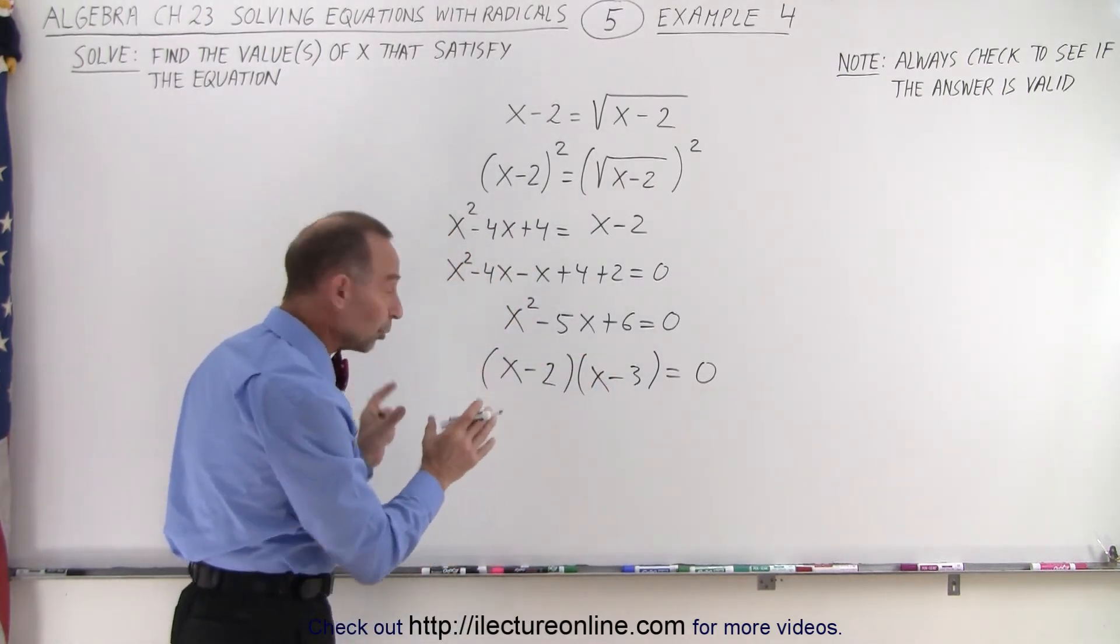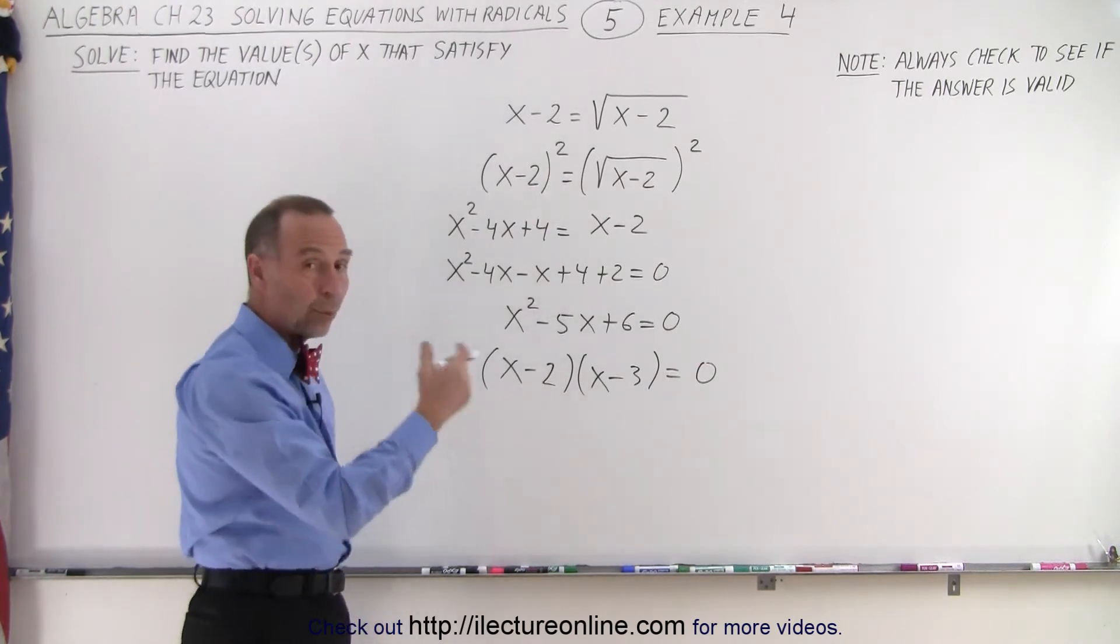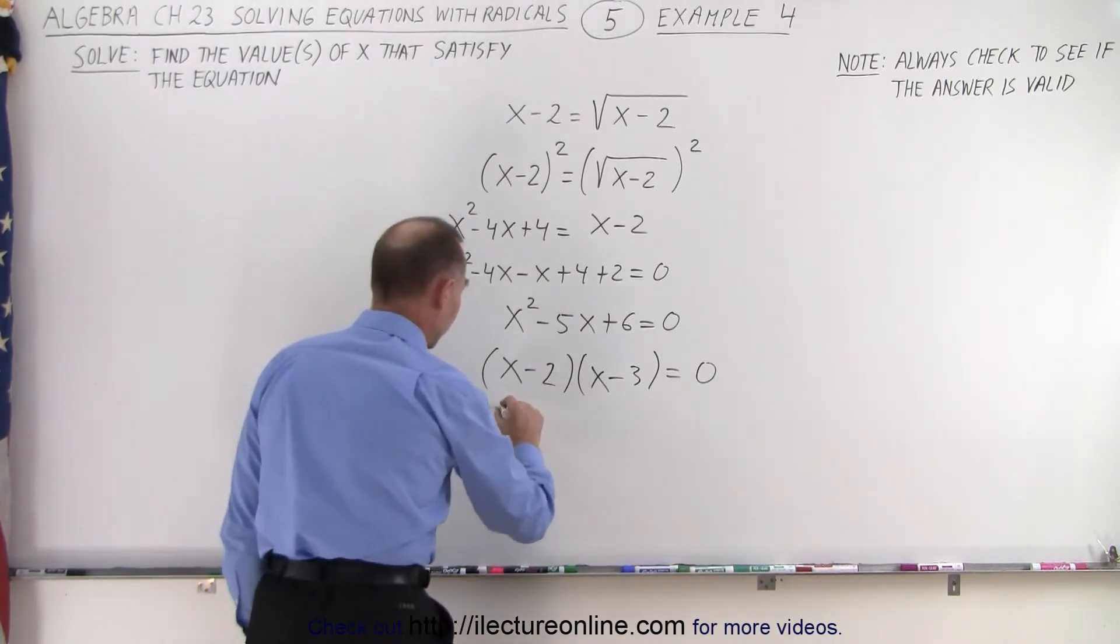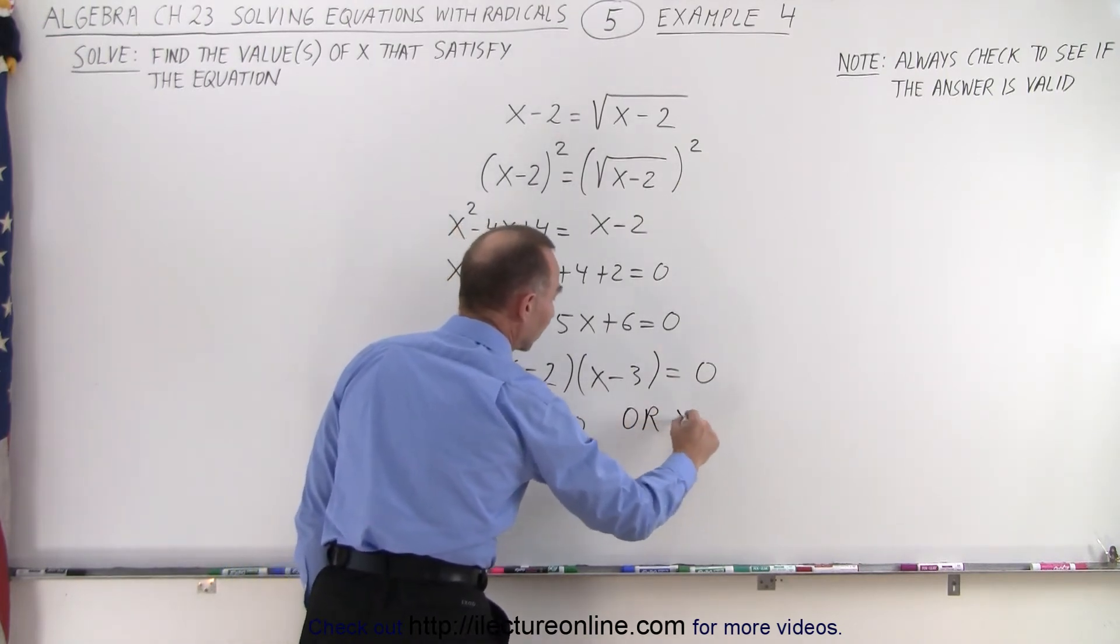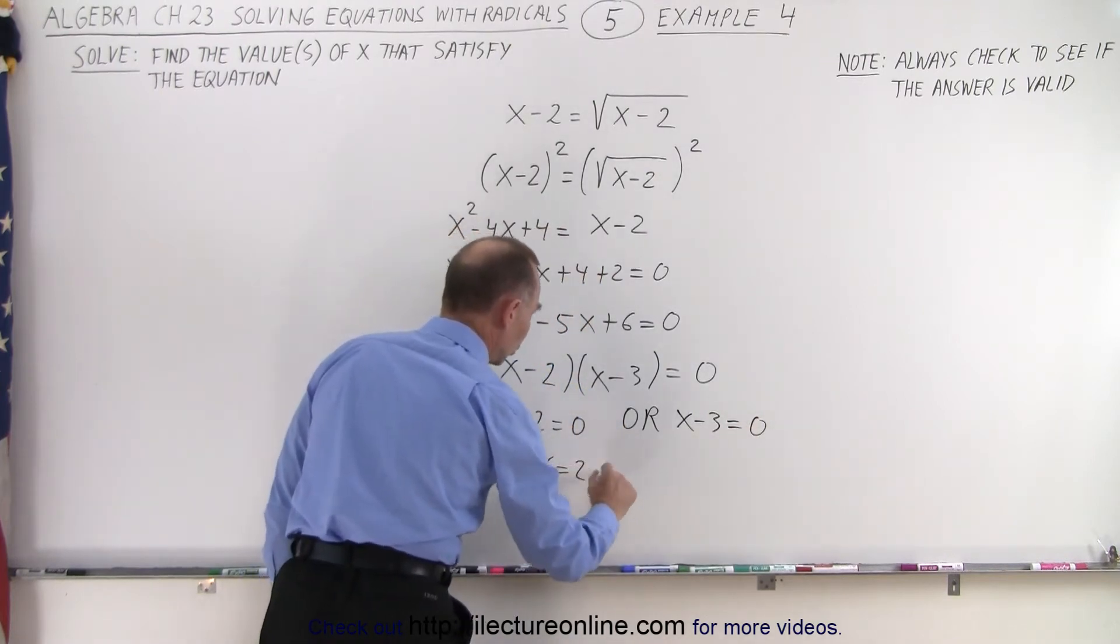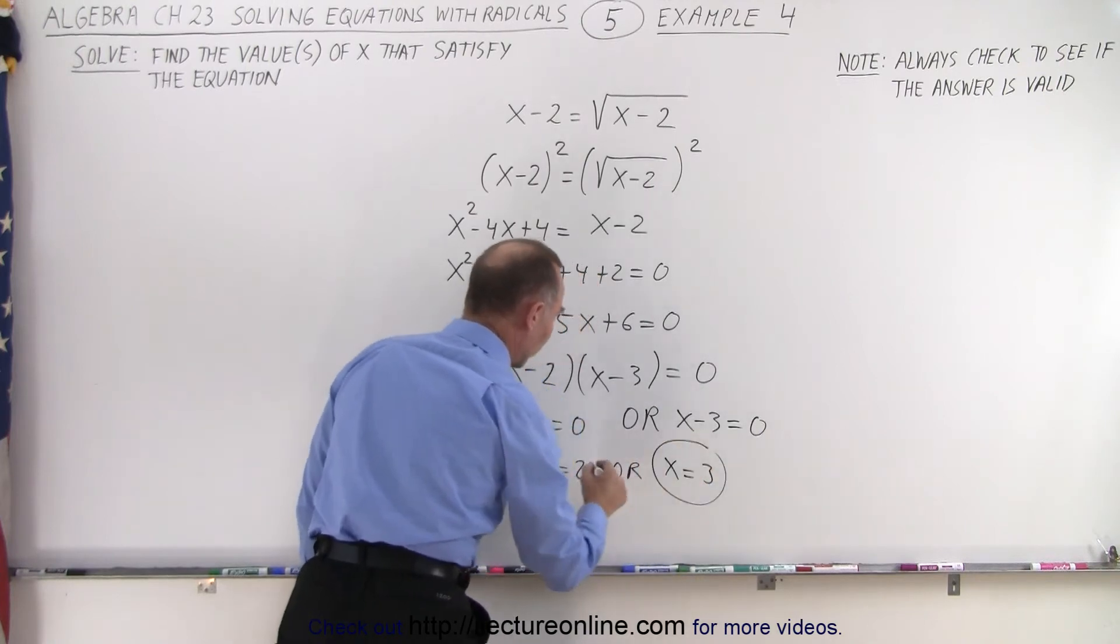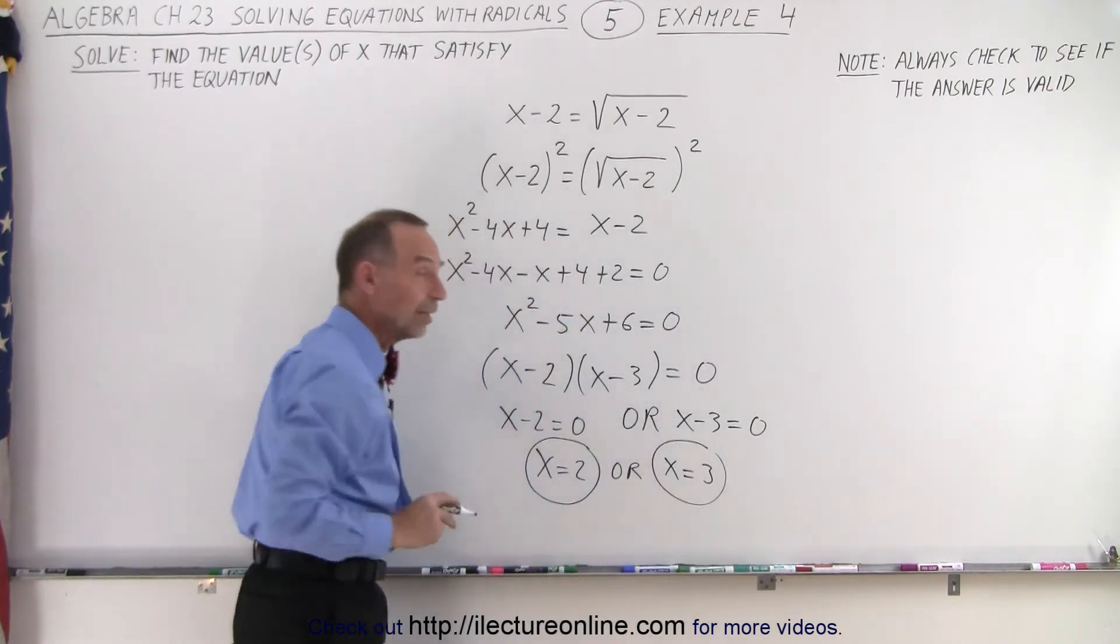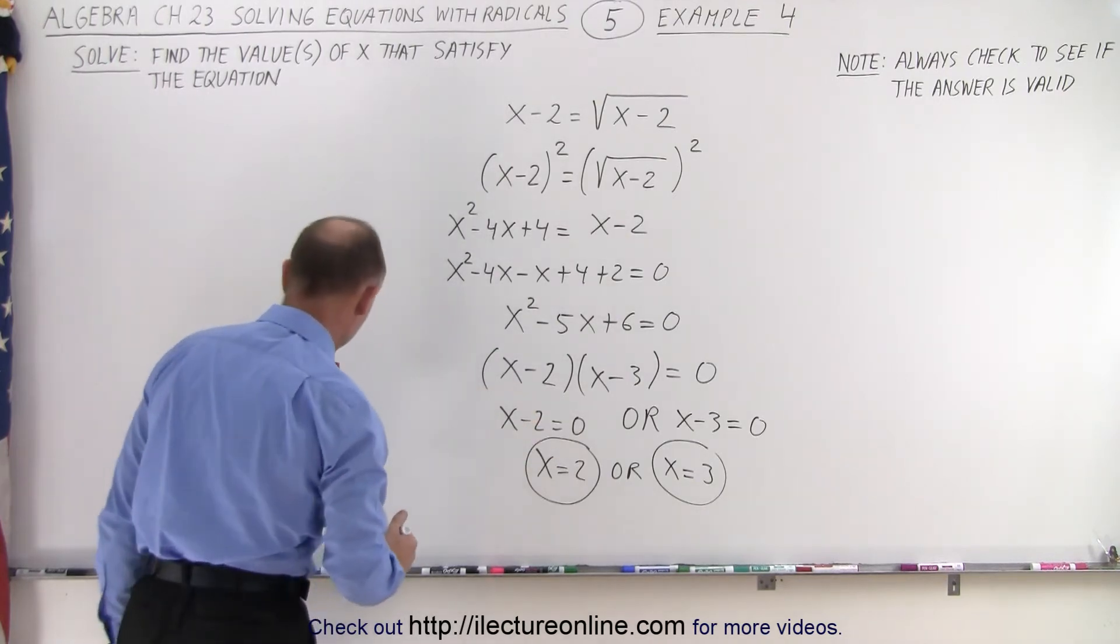Now since we have two binomials multiplied together, set equal to 0, well that means either the one or the other is 0. So in other words, x minus 2 equals 0 or x minus 3 equals 0. That means that x equals 2 or x equals 3. So it looks like there are two possible answers. Now we're not sure yet until we check them. We need to check both of these to see what we get.